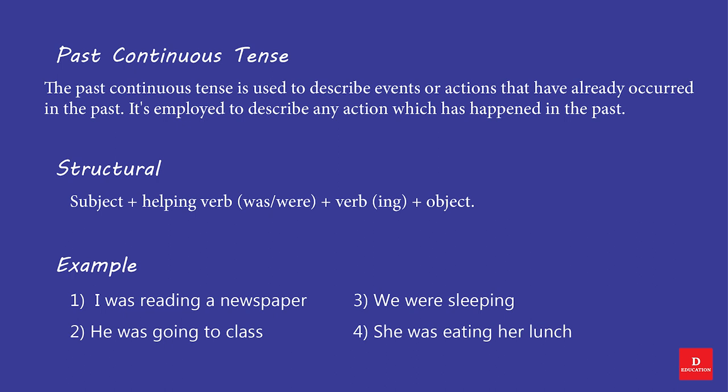Past Continuous Tense. The Past Continuous Tense is used to describe events or actions that have already occurred in the past — any action which has happened in the past. Structure: Subject + Past Helping Verb (was/were) + Verb (-ing) + Object. Examples: I was reading a newspaper. He was going to class. We were sleeping. She was eating her lunch.